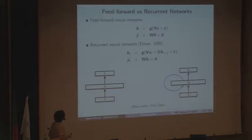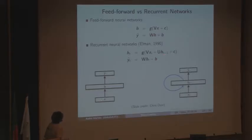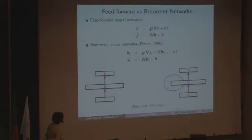Recurrent neural networks work across different time steps, denoted by subscript T. In the hidden layer, we use not just the input X_T but also the previous hidden state H_{T-1} — this is where the recurrence comes from. Graphically, while feedforward networks propagate everything forward in a simple chain, RNNs have a loop where the previous state influences generation of the next state.